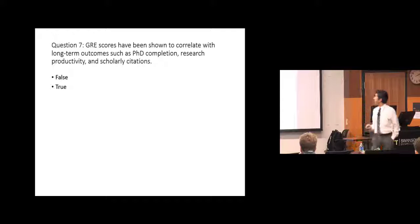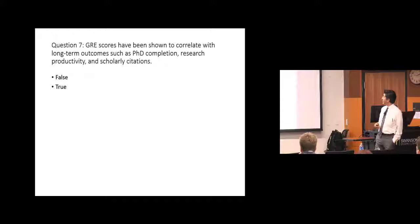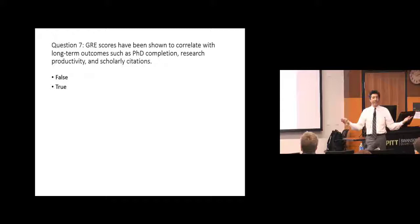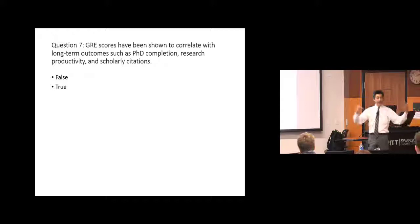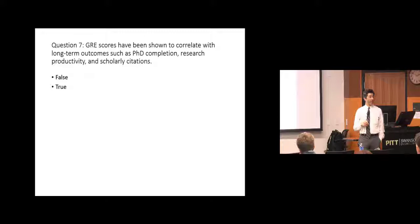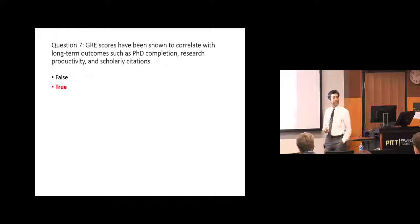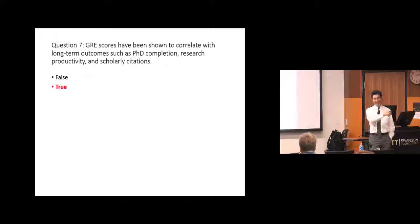Next question: GRE scores have been shown to correlate with long-term outcomes such as PhD completion, research productivity, and scholarly citations. True or false? Who thinks false? Who thinks true? The answer is true — positively correlated. But here is where I remind you that a positive correlation can be statistically significant because of a very large N, but still be weak. So now I'm going to ask: what is the strength of that correlation? Is it 0.9? 0.7? 0.5? 0.3? 0.1?